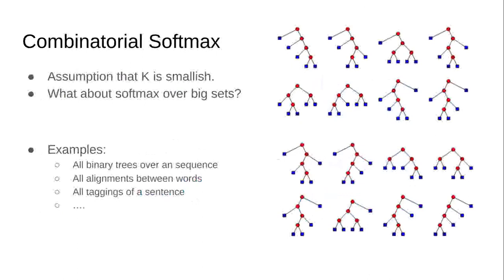There are lots of examples of this in natural language processing. Classical examples include the number of binary trees over a sequence, the number of alignments between words in different languages, or all possible part-of-speech taggings of a given sentence. Each of these sets is exponentially large with respect to their inputs, so the idea that we could somehow enumerate them, no matter how big our GPU, is problematic.